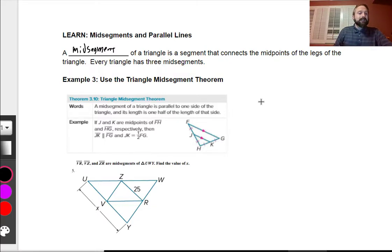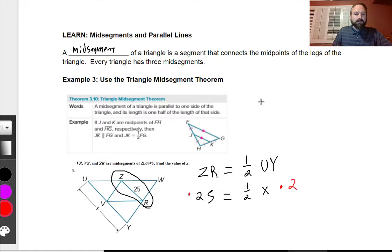VR, VZ, and ZR are mid-segments of triangle UWY. Find the value of X. So we know that this is a mid-segment right here. We know that ZR is going to be half of UY. We know that ZR is 25, using the substitution property. And UY is X, so half of X. Half of what equals 25? Let's get rid of this times a half by multiplying by 2 on both sides. And then we'll get our result of 50 is equal to X.